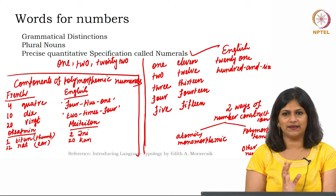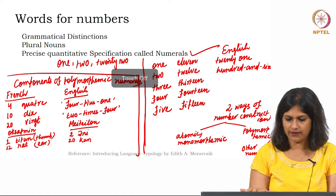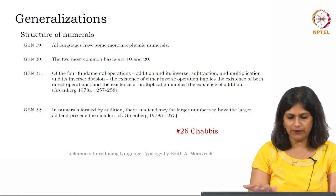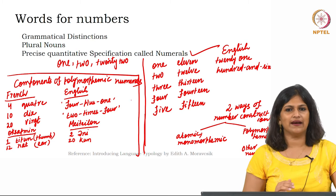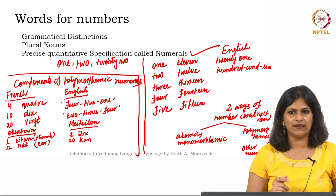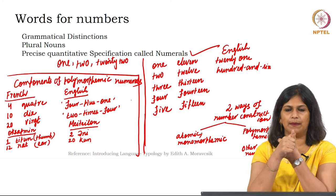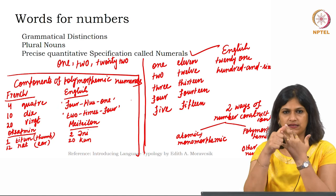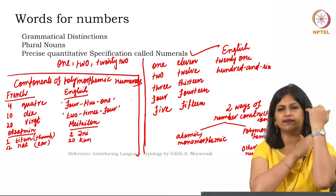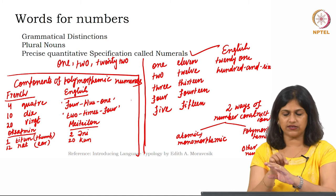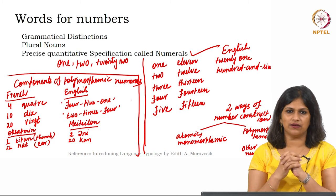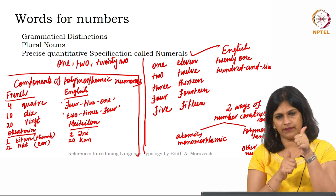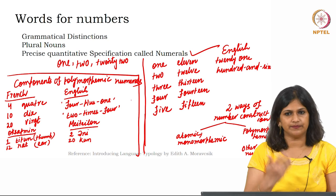Each body part has a certain number in Oksapmin. If you check Morapsic's book, there is an interesting picture where for Oksapmin speakers, each body part is assigned a number. The counting or numeral system starts from the thumb. So 1 is the thumb, 2 is the next, all the way to 10, and each individual body part is represented with a number. That means the numeral 1 is semantically the same as the thumb, and 12 — 'Naat' — means the ear.